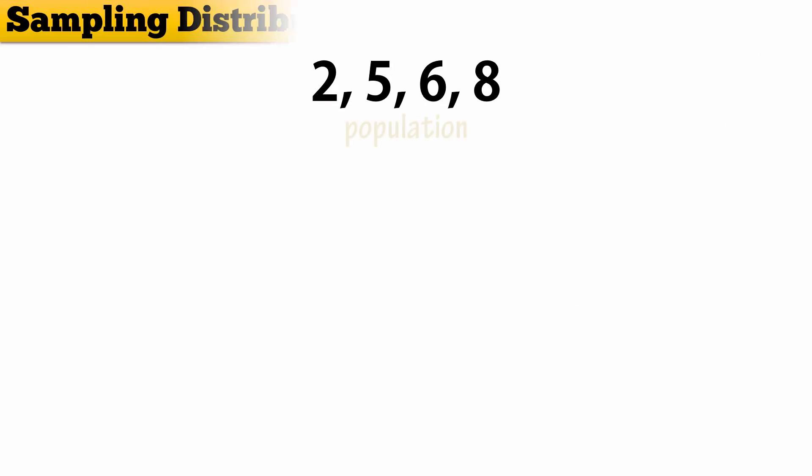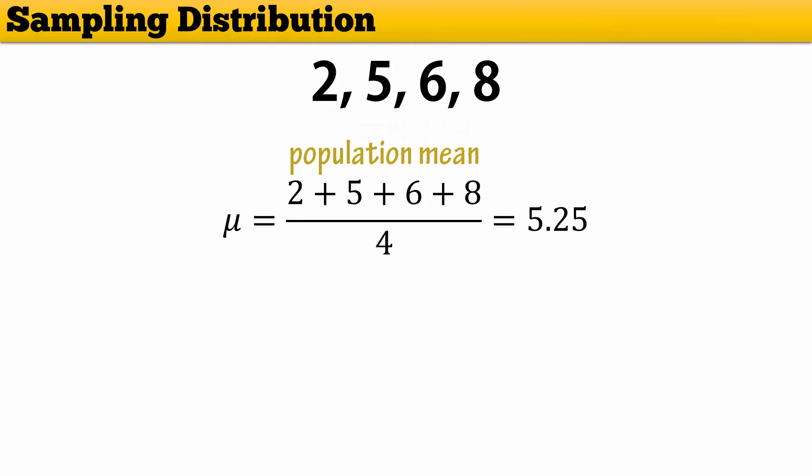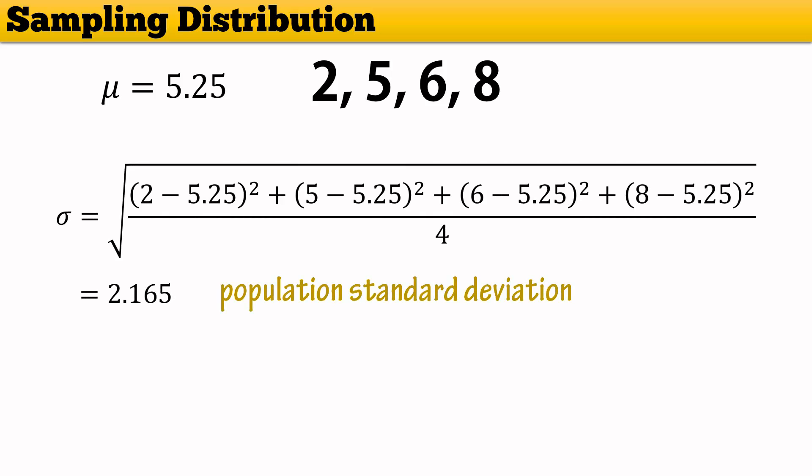Consider a population consisting of these four values. The mean of this population is 5.25, and the population standard deviation is 2.165.